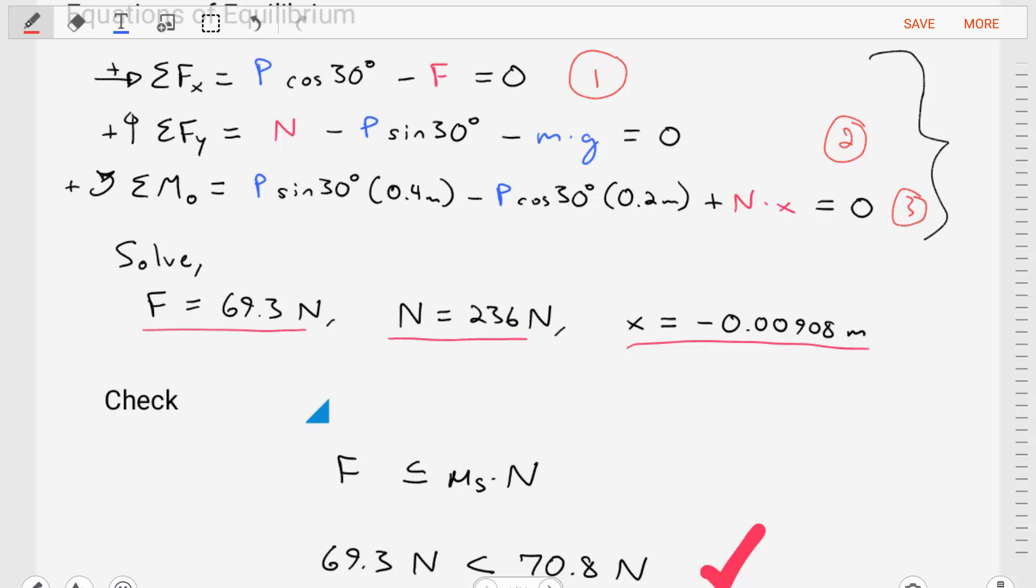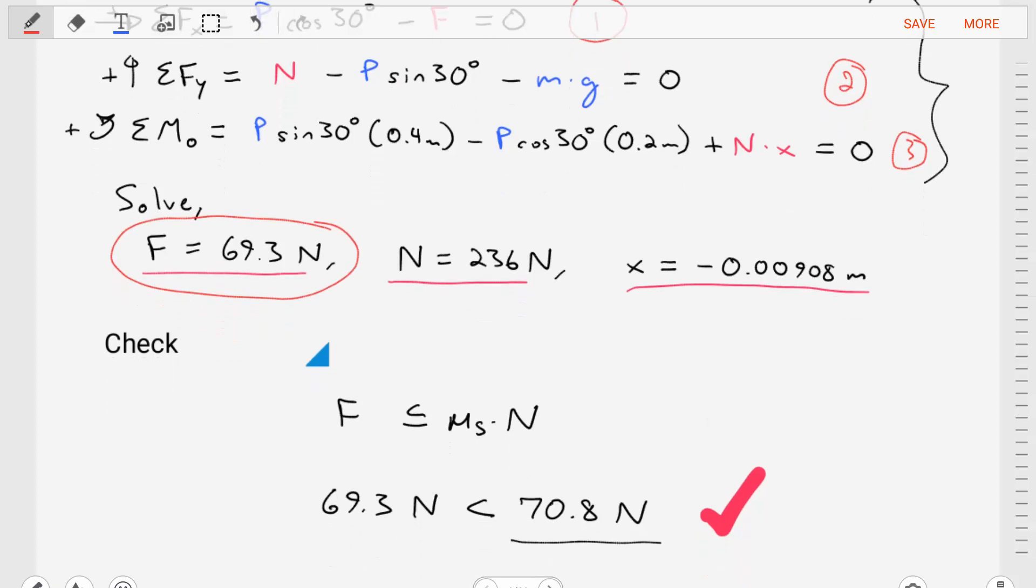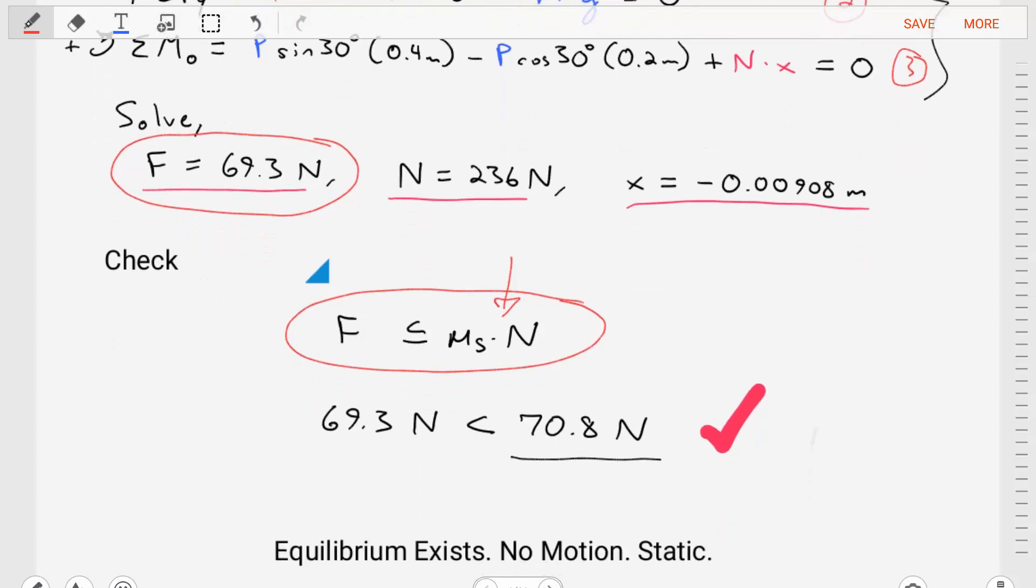Let's now check to see if we stay in that static friction case. We stay in a case of equilibrium. We take the force that is needed for equilibrium and we compare it using this inequality. And we want to see, is that force less than or equal to the static friction coefficient times a normal force? Is the force for equilibrium less than what is required to prevent sliding? And in our case, it looks like equilibrium exists.